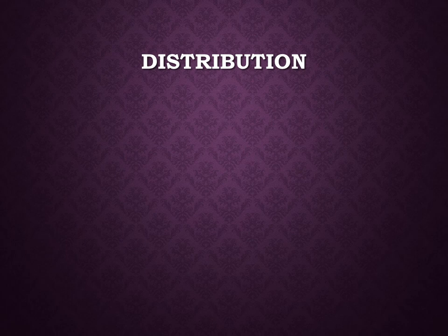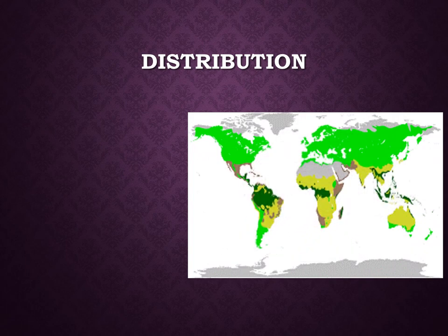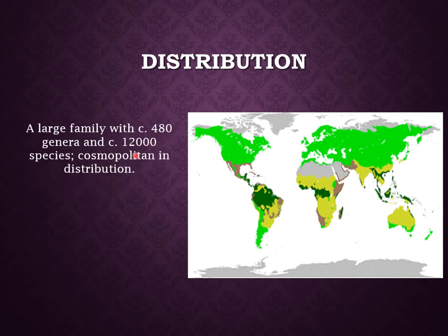Now we are going to discuss the distribution pattern of the family Leguminaceae or Fabaceae, also known as Papilionaceae. The members of this family are distributed in the temperate regions of both the Northern and the Southern Hemisphere. The Fabaceae family is the third largest family of flowering plants, behind Orchidaceae and Asteraceae. This large family contains about 480 genera and about 12,000 species, and hence the distribution is cosmopolitan.